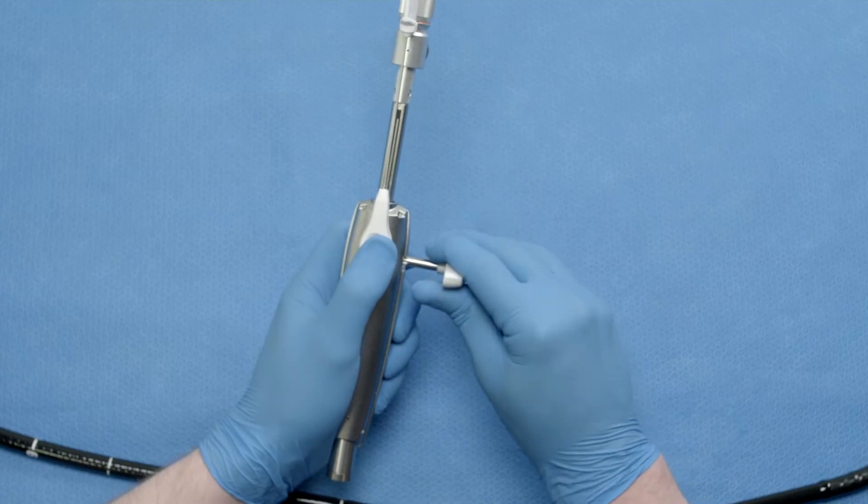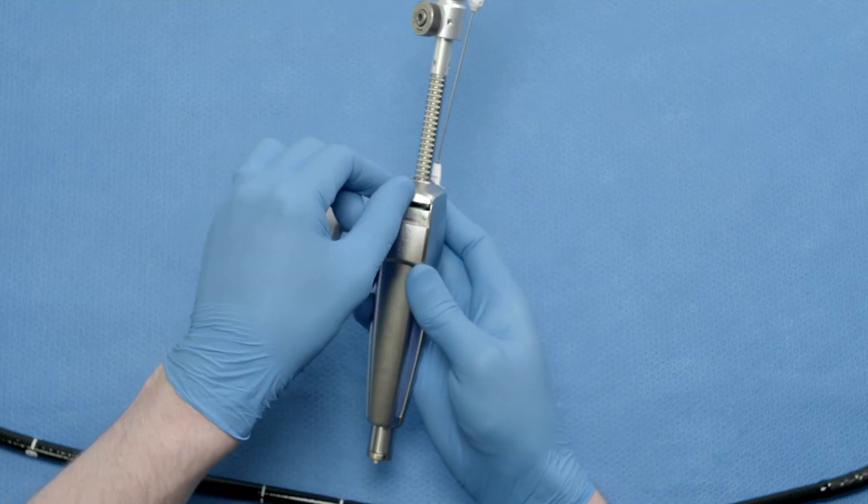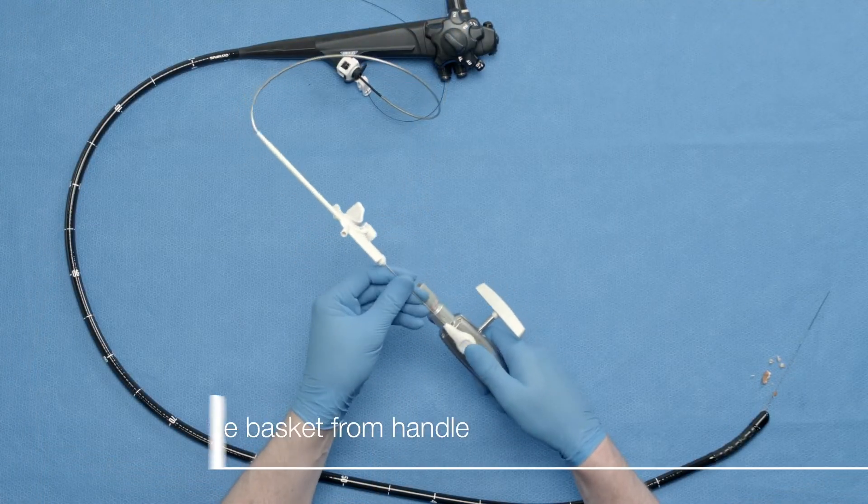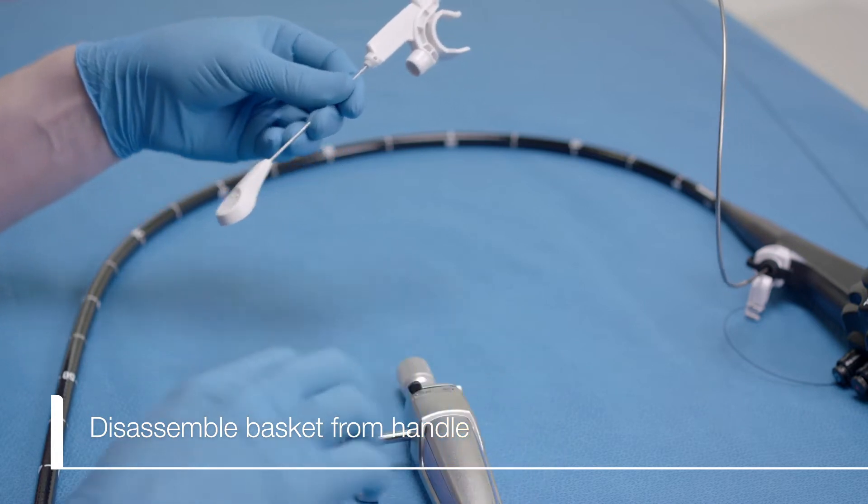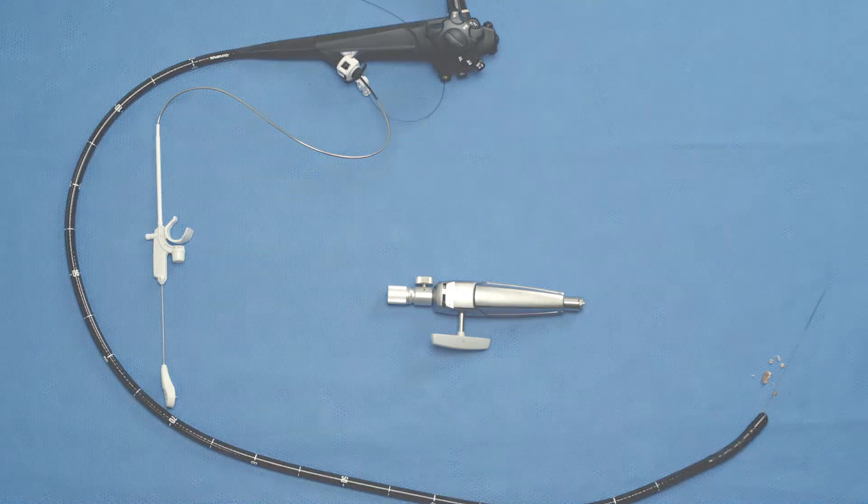When either the stone fragments or the basket breaks, turn the ratchet off and fully close the basket, then remove the basket from the patient. Disassemble the VortiCatch V Basket from the Lithocrush V Handle by reversing the assembly steps. Dispose of the VortiCatch V Basket when the procedure is finished.